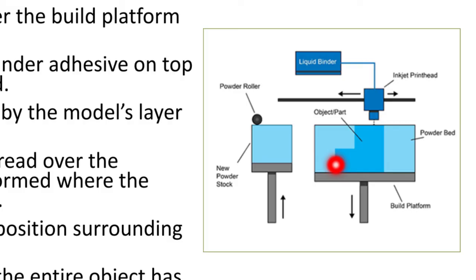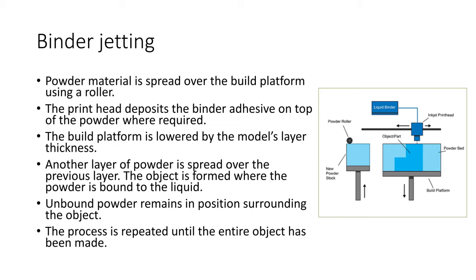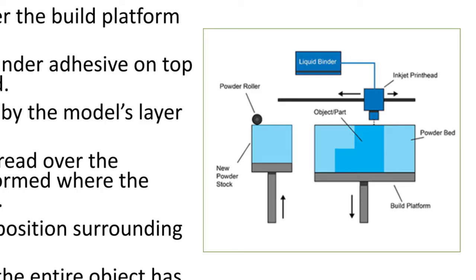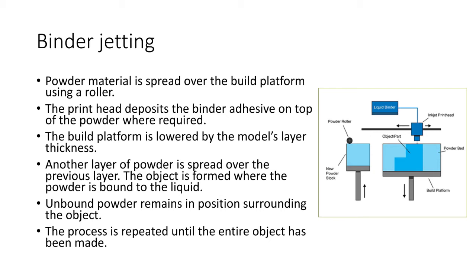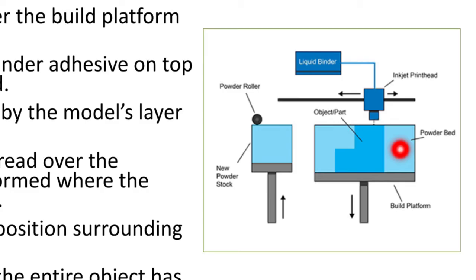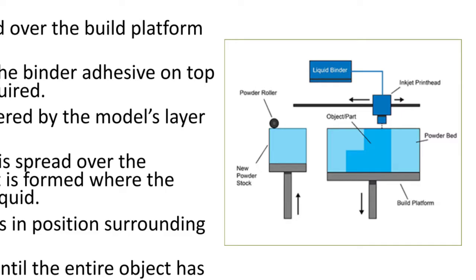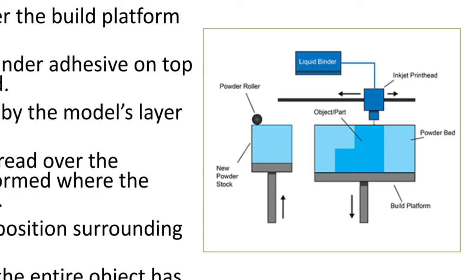The build platform is lowered by the model layer thickness. Another layer of powder is spread over the previous layer, and the binder adhesive is again applied to harden the required portion. Unbound powder remains in position surrounding the object. This process is repeated until the entire object has been made, and then the complete object is removed from the tank.